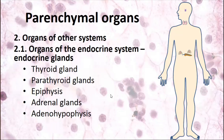We described two groups of parenchymal organs from visceral systems — digestive, respiratory, male, and female reproductive. Now we turn to parenchymal organs belonging to regulatory systems: endocrine and immune. Beginning with the endocrine system — there are organs of the endocrine system: endocrine glands including thyroid gland, parathyroid glands, epiphysis, adenohypophysis, adrenal glands, and also islets of Langerhans and other endocrine structures.